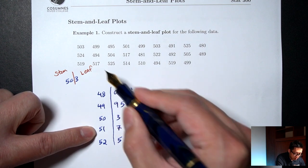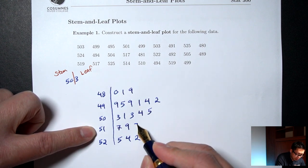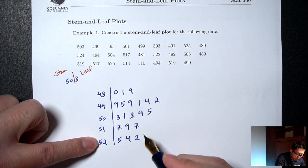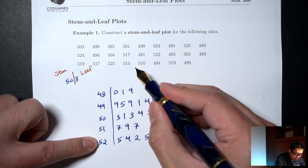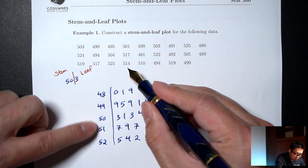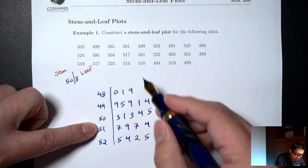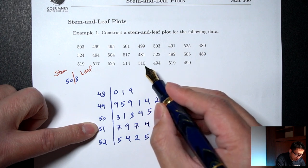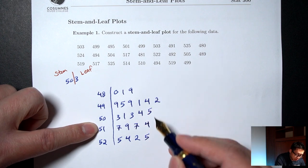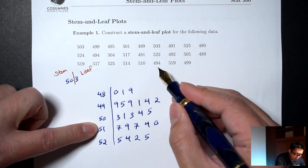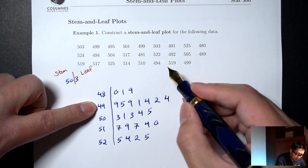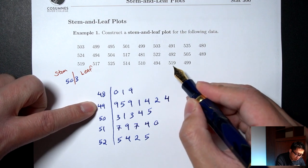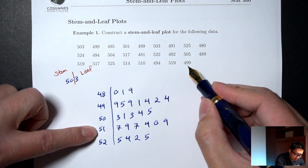Continuing through the remaining data: 517, 525, 514, 510, 494, 519, 499 — each number gets its stem identified and its last digit written as the leaf on the right side.